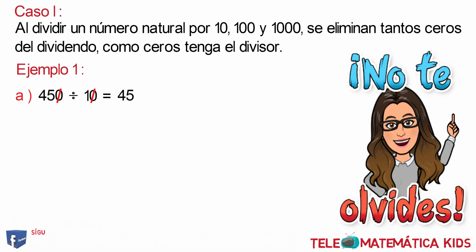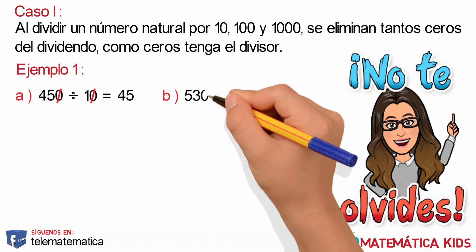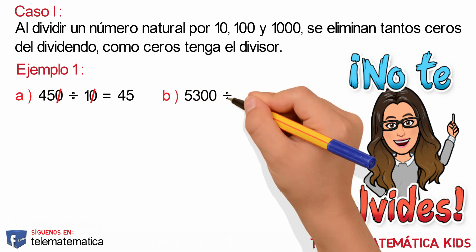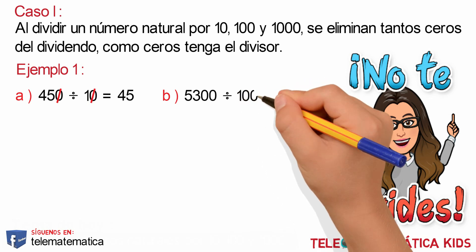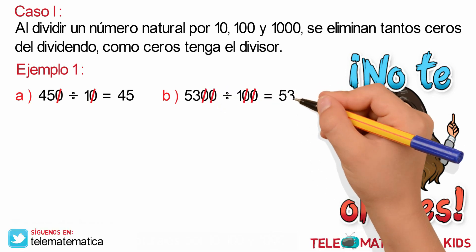Muy bien. Literal B: 5,300 dividido para 100. Aplicando el procedimiento, simplificamos los dos ceros del divisor con los dos ceros de la derecha del dividendo y nos quedaría como resultado 53.